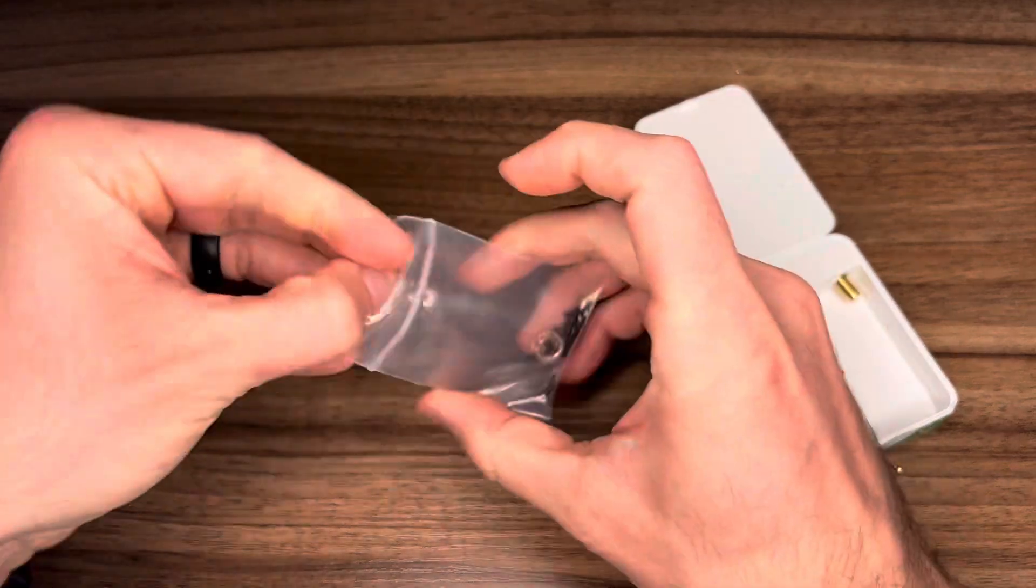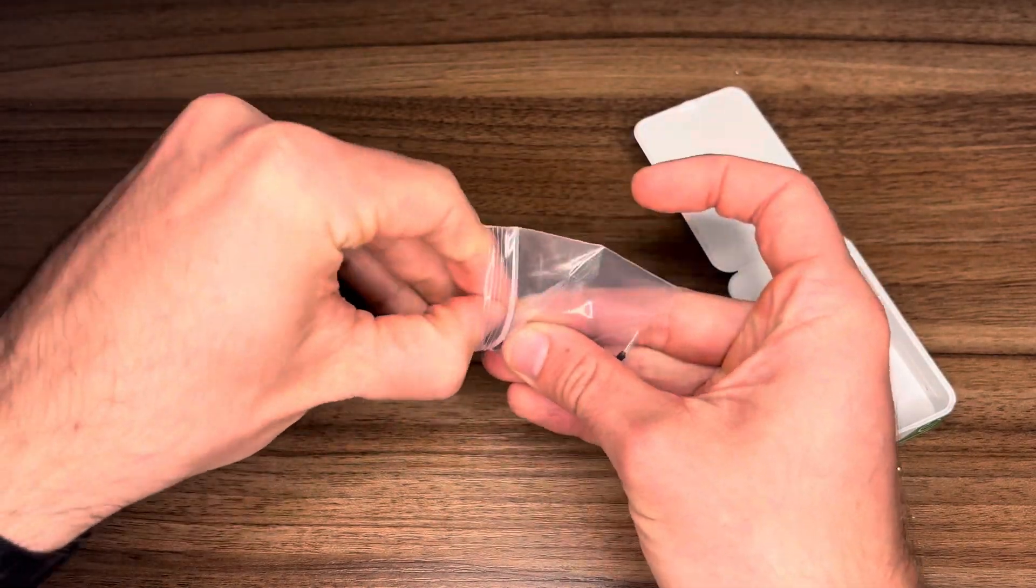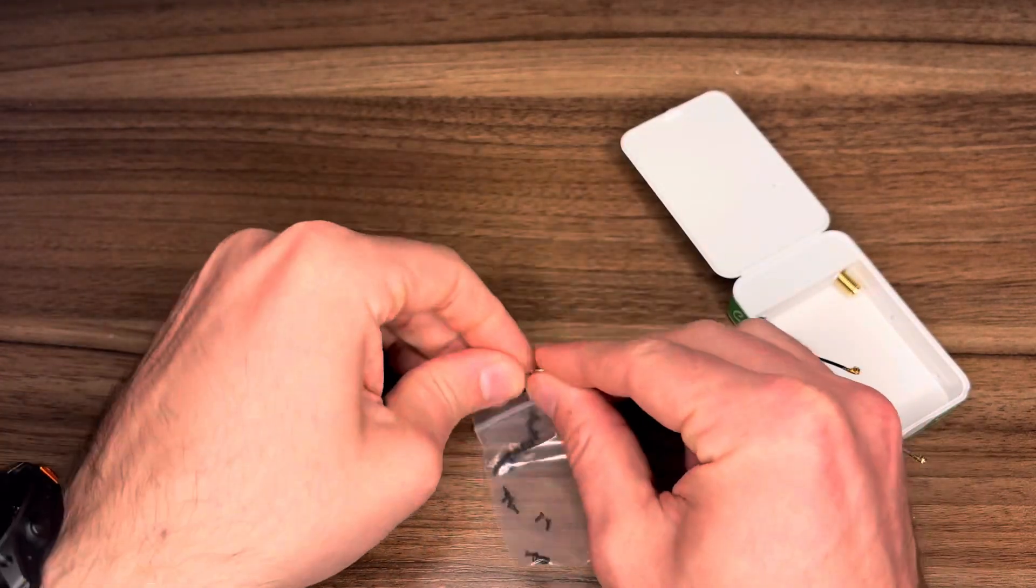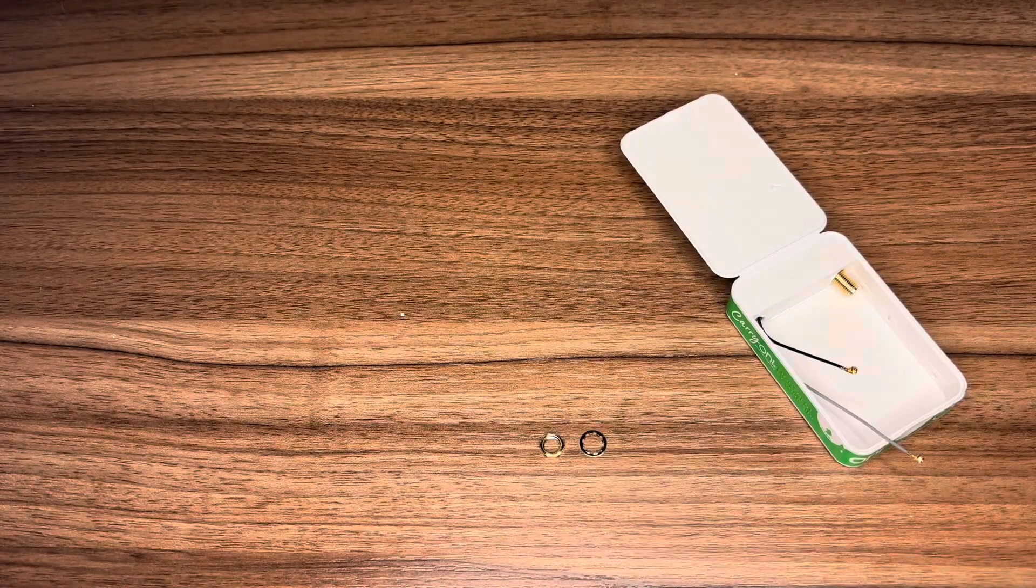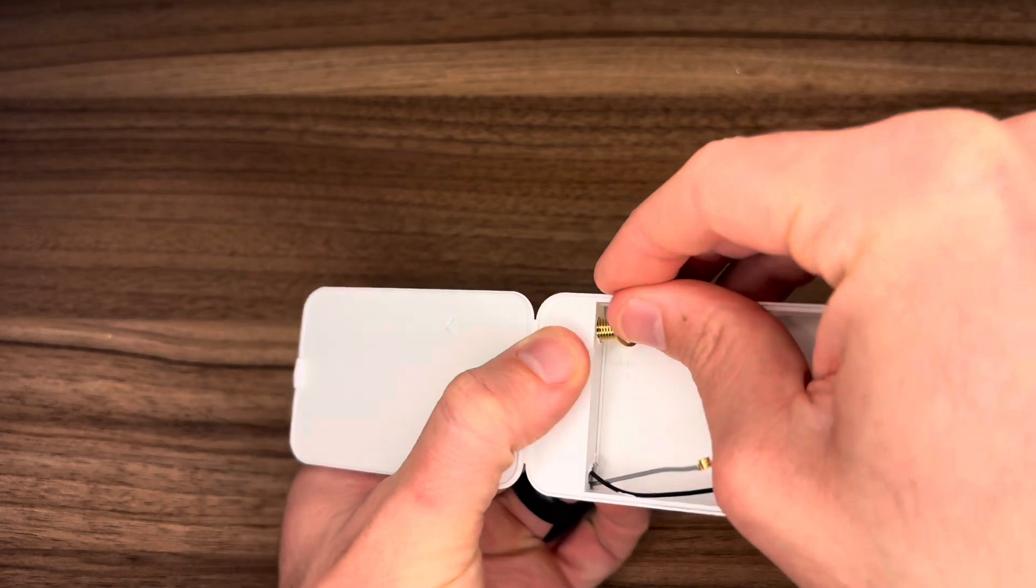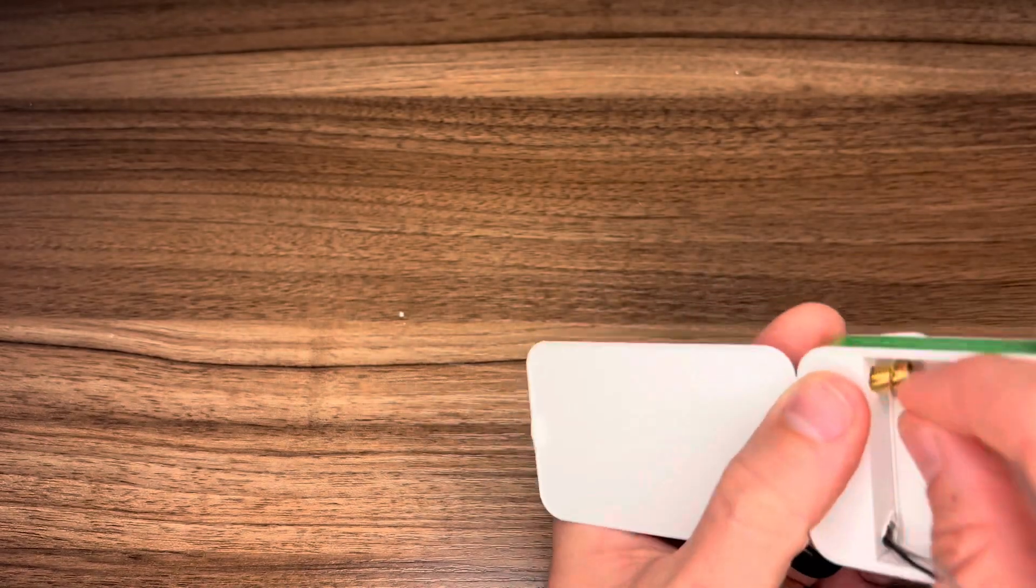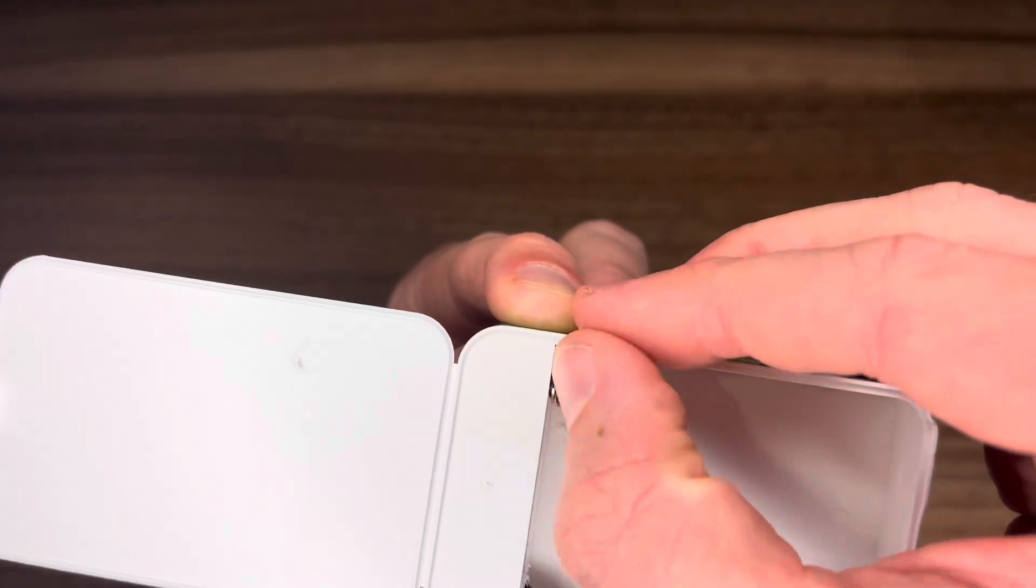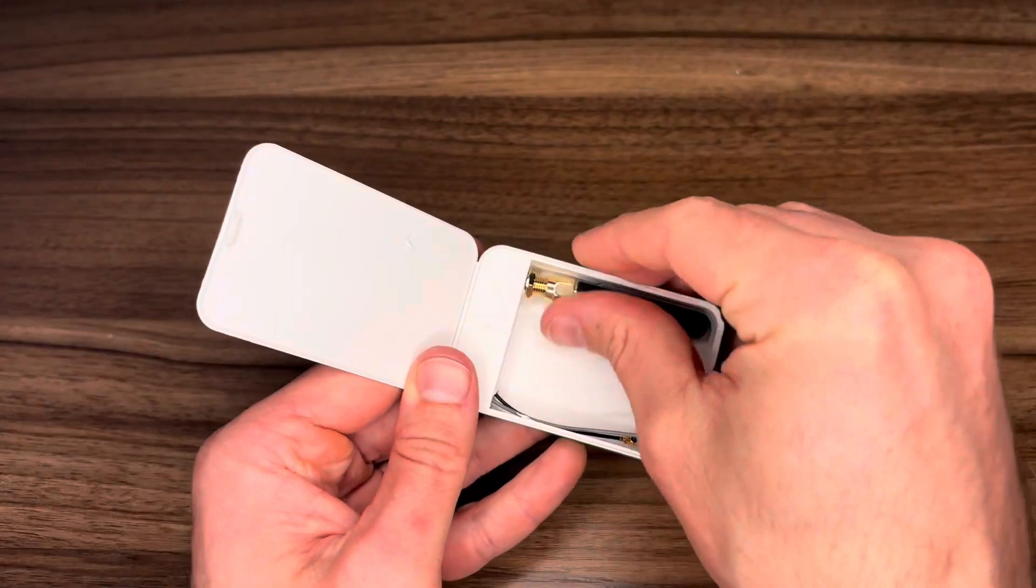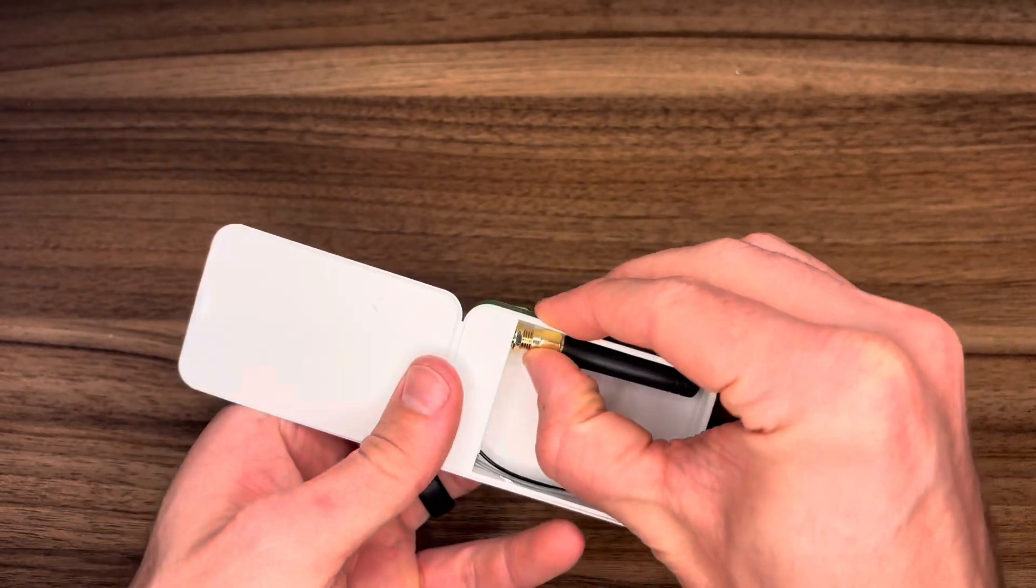Before we get ahead of ourselves, we're going to have to do what I found to be the most aggravating part of this project. Find the locking washer and the nut and secure the SMA connector to the box. Now please enjoy watching me struggle getting the washer and the nut secured properly. Once it's attached securely, you can connect your SMA antenna.